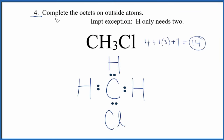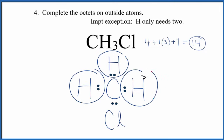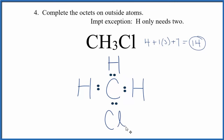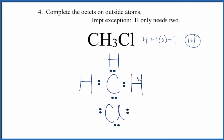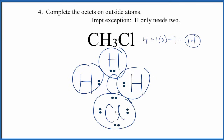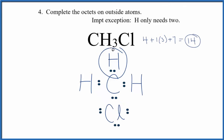In step 4, we complete the octets on the outside atoms. An important exception is hydrogen — hydrogen only needs 2 valence electrons to have a full outer shell. So the hydrogens all have 2 valence electrons and we're done with them. We've used 8 of our 14 total, so we have 6 more valence electrons to put around the chlorine. The chlorine has 8, and the carbon has an octet. This is the Lewis structure for CH3Cl.